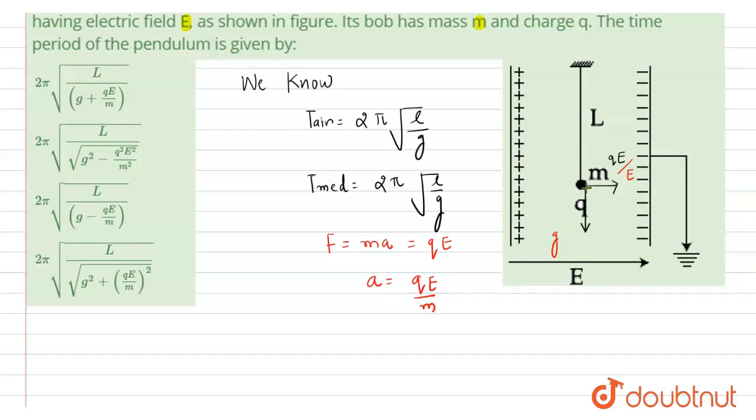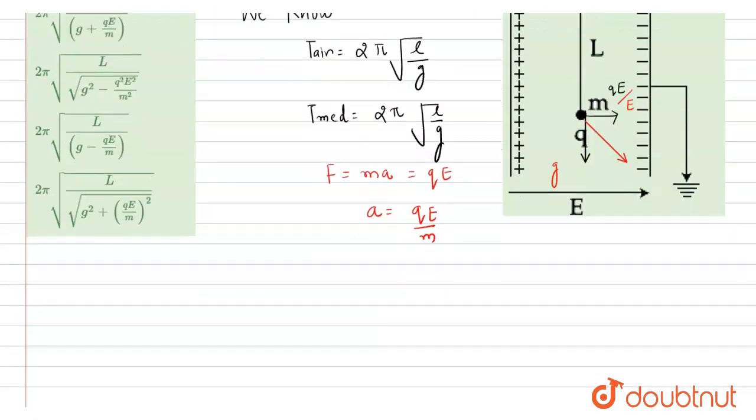Now its net electric field will be the magnitude of this. So we get it will become g effective. So g effective equals square root of - this is g effective - so g effective will become square root of g² plus (qE/m)².